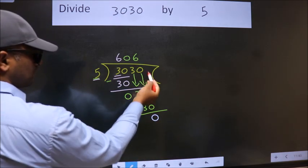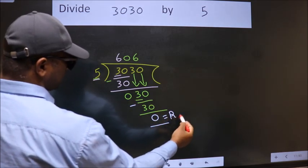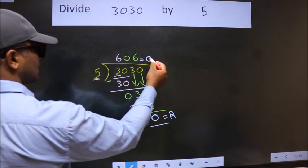No more numbers to bring it down. So, we stop here. This is our remainder. This is our quotient.